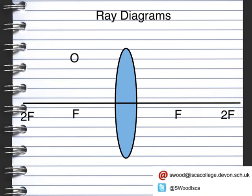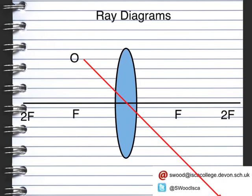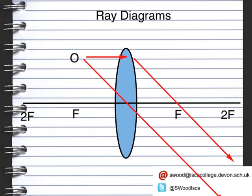If we bring our object in so it's at one focal length and draw our line going through the lens, then draw our line to be refracted, we can see that the two lines are running parallel. So these two lines will never meet — if the object is at one focal length, then we will not create a real image.